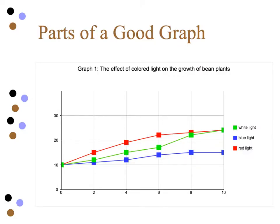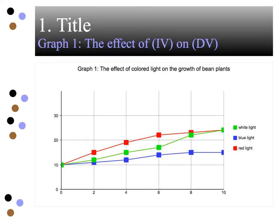Every good graph has certain aspects to it, because what we're trying to do as we draw the graph is portray information. The first thing we're going to have is a title. Notice again we have the same format — Graph 1. We could have lots of different graphs, but we call this one Graph 1. It's the first graph to show the effect of the IV on the DV. So in this case, the effect of colored light on the growth of bean plants.